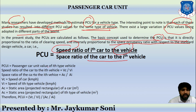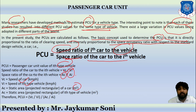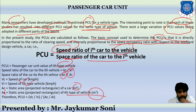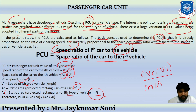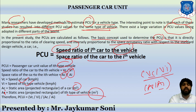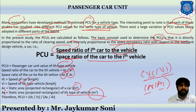To summarize: PCU_i equals the passenger car unit value for the ith vehicle; speed ratio = Vc/Vi; space ratio = Ac/Ai. So PCU_i = (Vc/Vi) / (Ac/Ai). This is only a sample formula and no exam examples based on this will be asked. We will be discussing the Level of Service in the next session. Thank you.